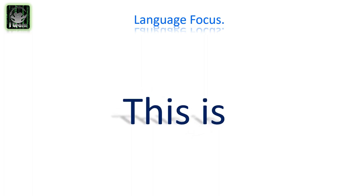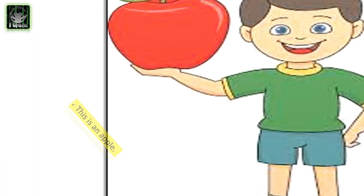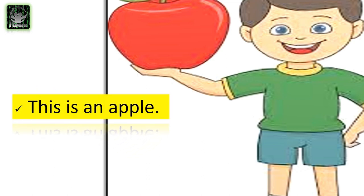Let's learn simple structures to build sentences. We use 'this is' to introduce something or someone near to us — something we can feel, touch, or hold. Look at this picture: this is an apple. Look at the apple in the boy's hand — he is holding it, he can touch the apple. So we say: this is an apple. We use 'this is' in sentences to introduce something or someone very close to us.